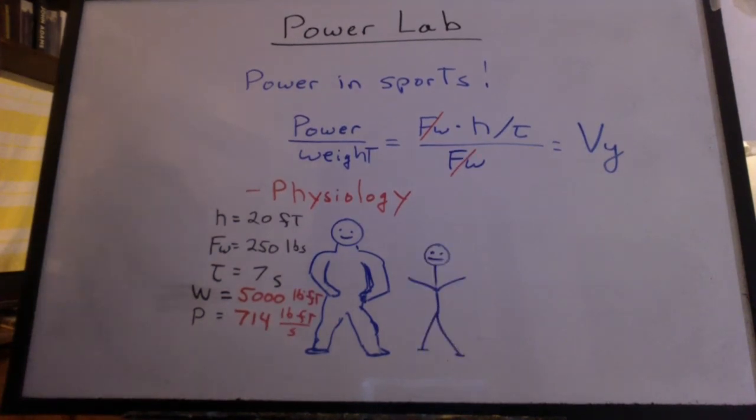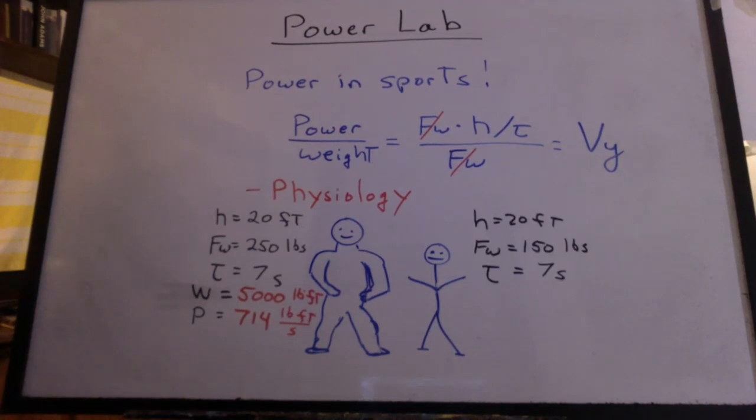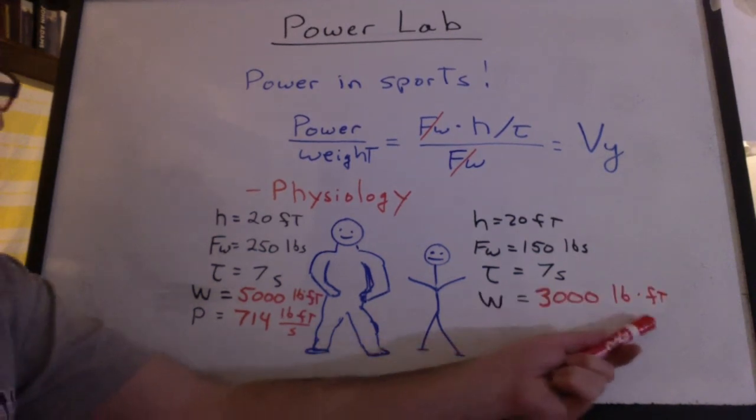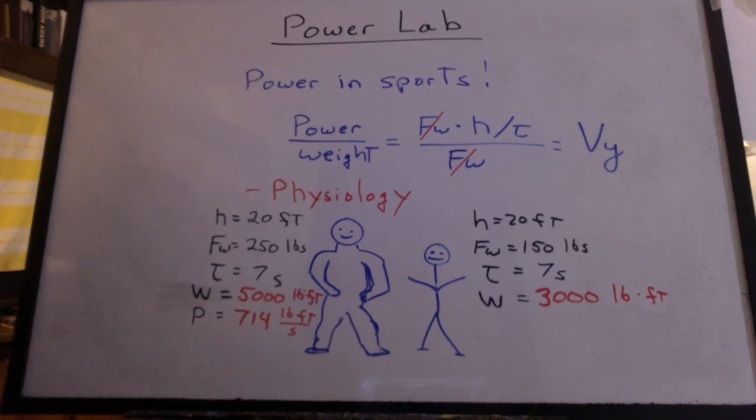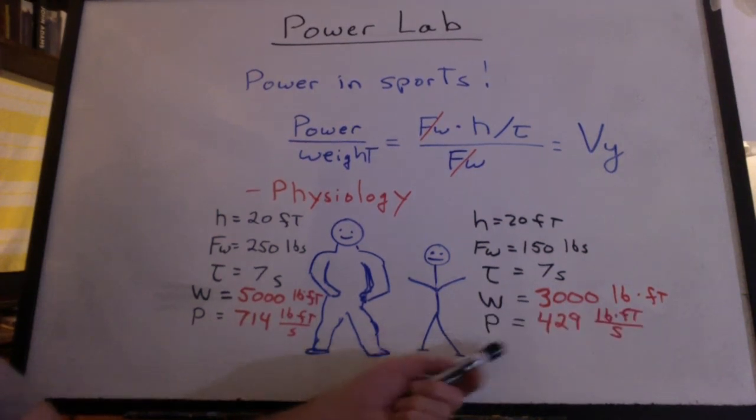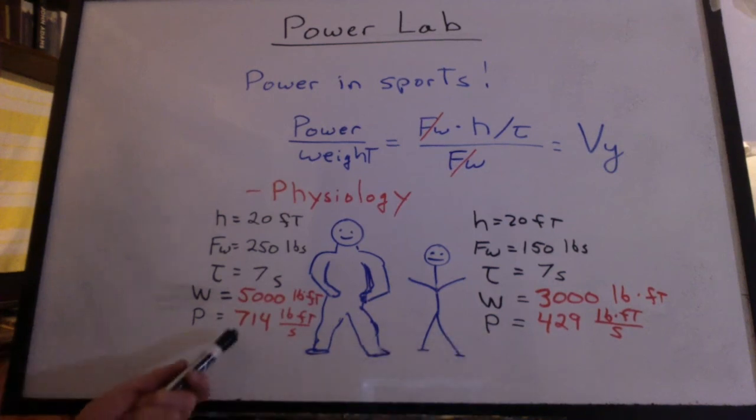Well, now we have this skinny kid, and let's just say this kid runs with 20 feet, weighs 150 pounds, and also does it in the same seven seconds. Well, this kid did 3,000 pound feet of work compared to 5,000 pound feet of work for the big guy. That sounds more impressive. And this guy's power is 429 pound feet per second, a lot less than the big guy's power.